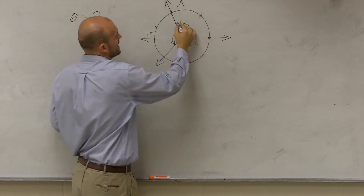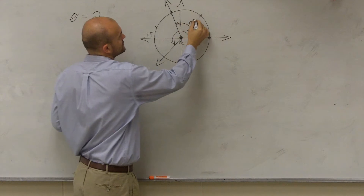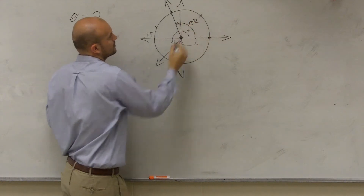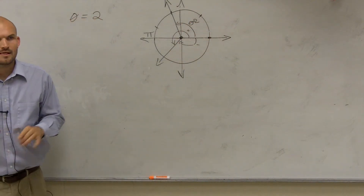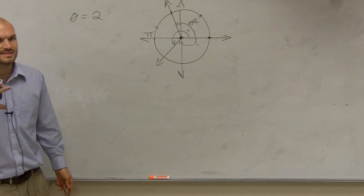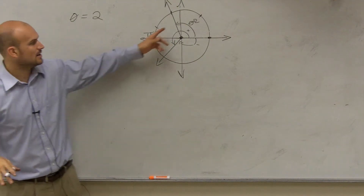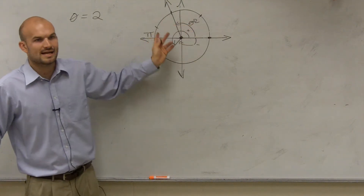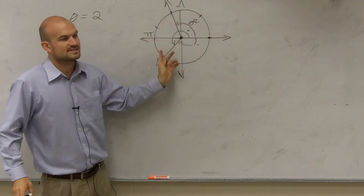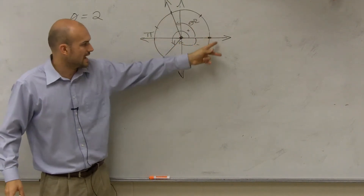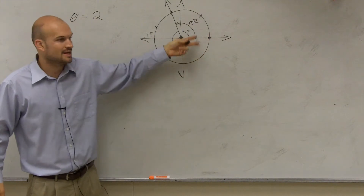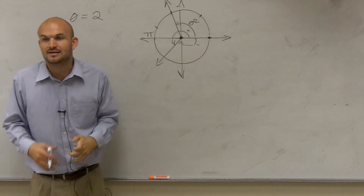So that would be the angle of 2. Then once we started talking about angles in radians, we asked: where's 6 radians? Where's 5 radians? Or negative 1 radian, negative 2 radians?